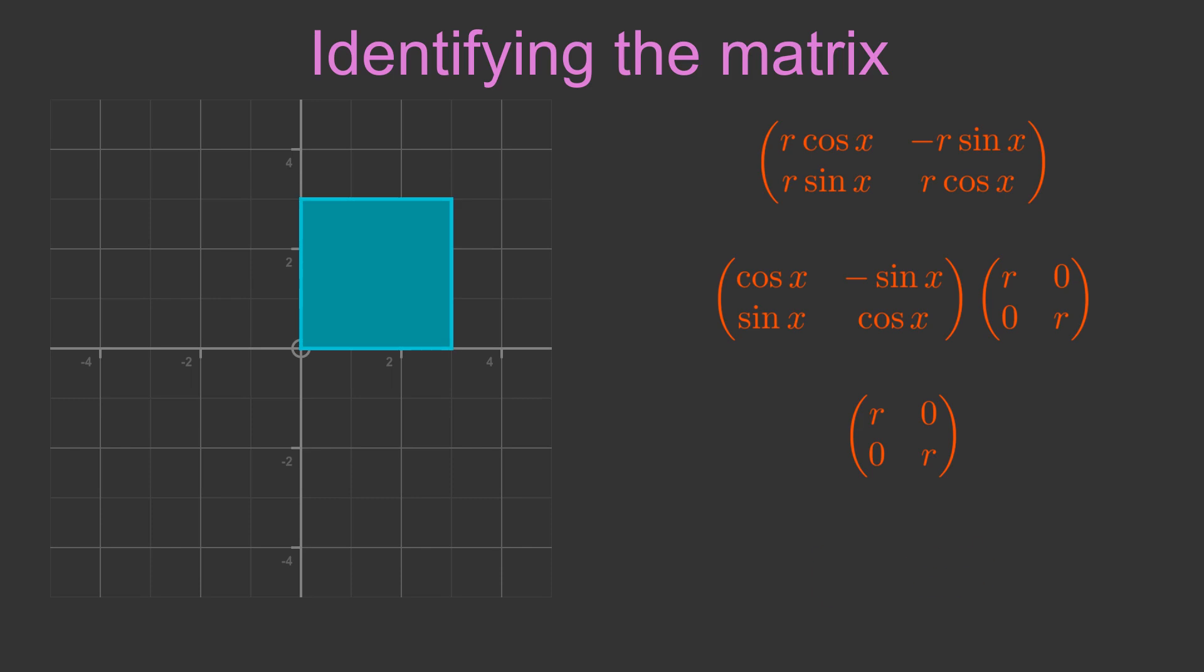The left hand matrix using x is also a well known transformation that rotates the 2D plane by angle x counterclockwise about the origin. Again, the square illustrates what happens to the xy plane when we apply this transformation.